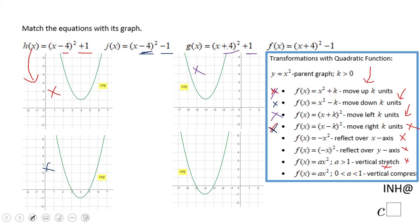And the last graph obviously is the last equation. That is gonna go with this and you notice plus 4 minus 1. Yes, that is a move four left, one down.